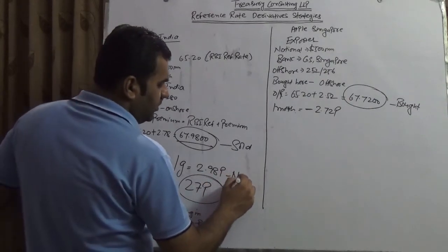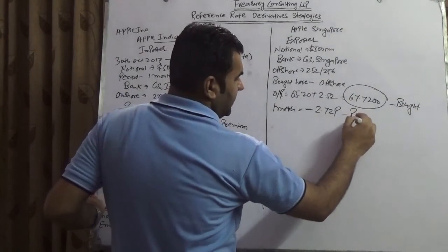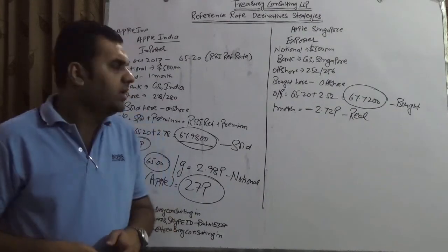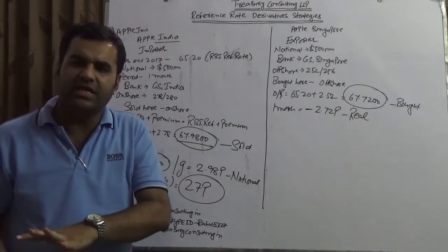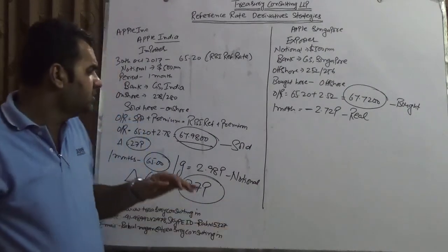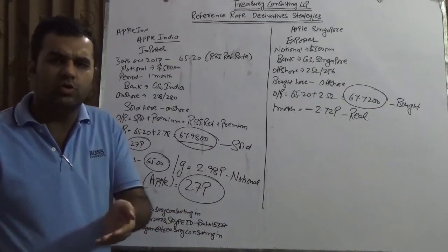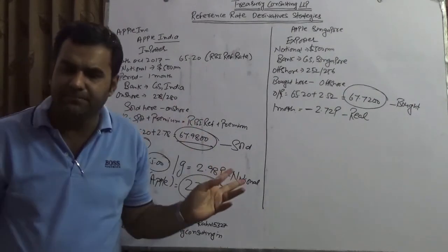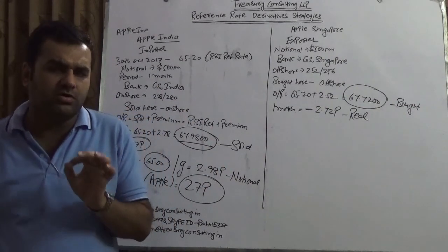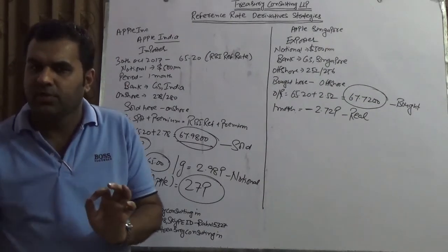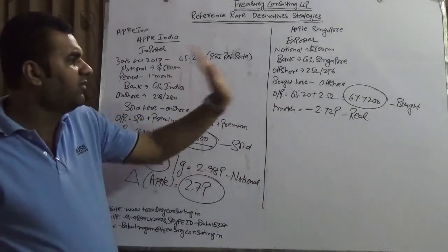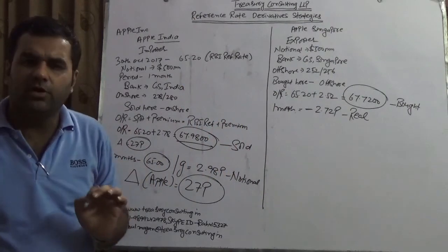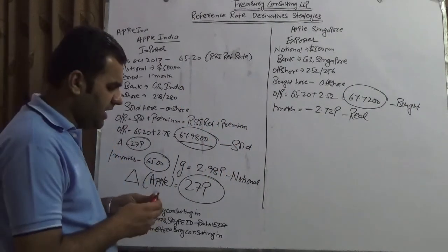This is how the reference rate derivative strategies are possible. The only difference in this trade would be this gain would be notional while this loss would be real. Next month they are going to roll over the same. They can increase this amount of $500 million to $600 million or decrease to $400 million. This is not a cancellation, this is a rollover—cancellation plus fresh booking.